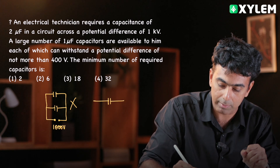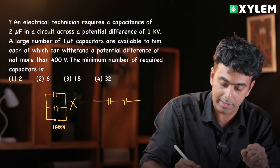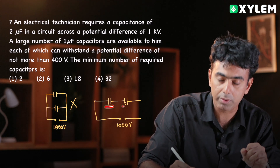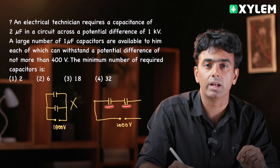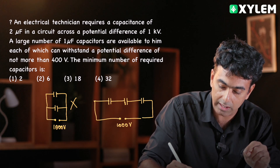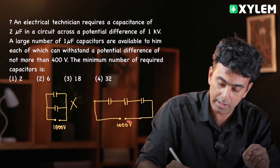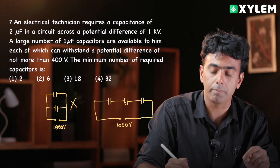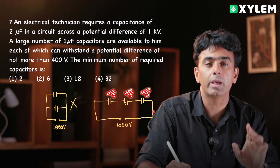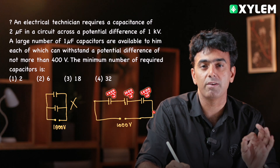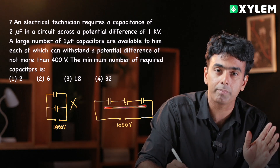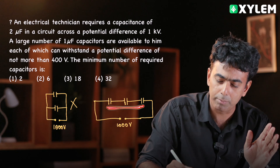If there is one capacitor, and one more capacitor — with 1000V across two, here is 500V and here is 500V. But the limit is 400V, so that is not safe. Now, if we use three capacitors in series: 1000 divided by 3 gives approximately 333V per capacitor, which is less than 400V. So the capacitor is safe.